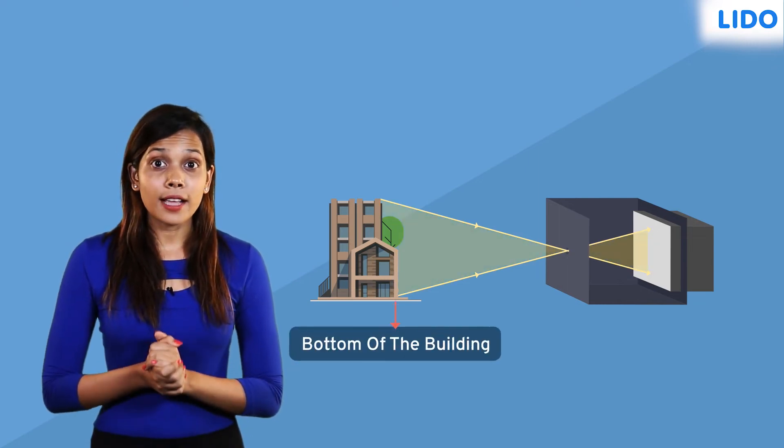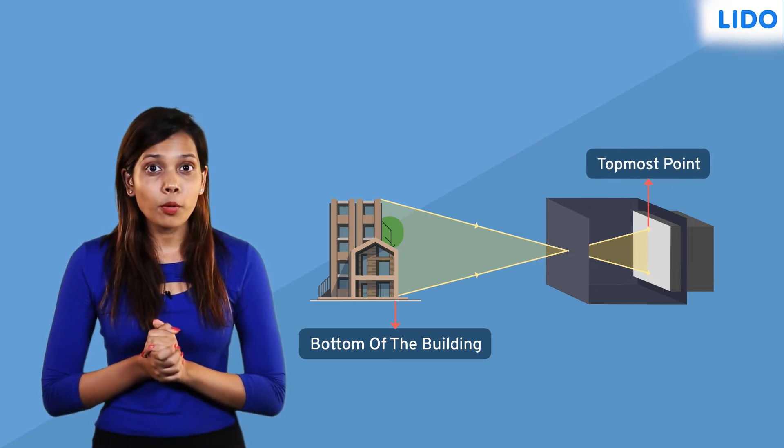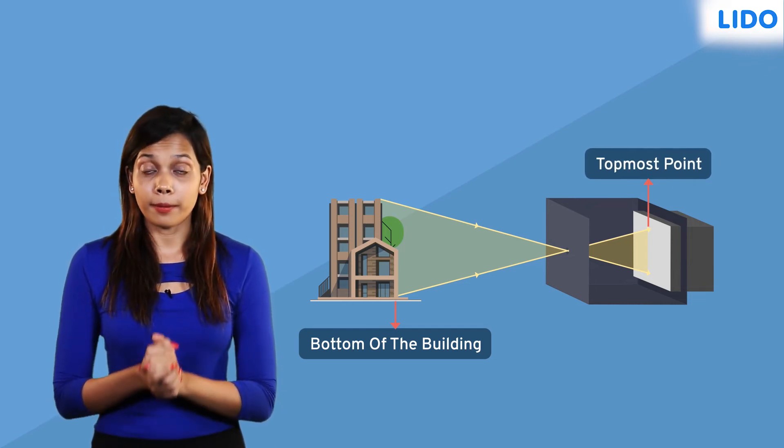This ray of light coming from the bottom of the building is at the topmost point of the tracing paper in the camera.